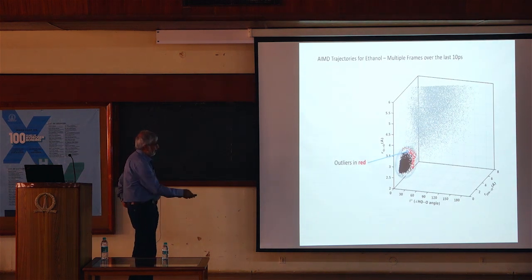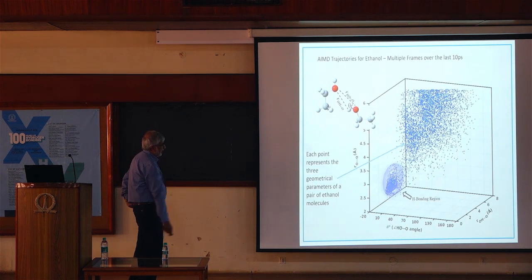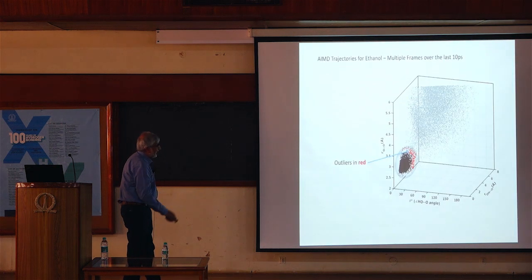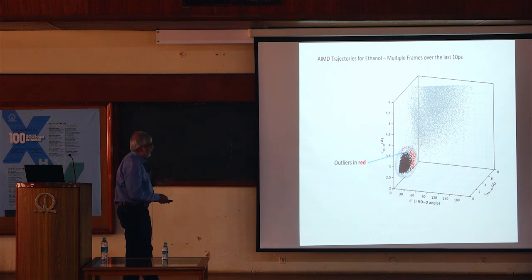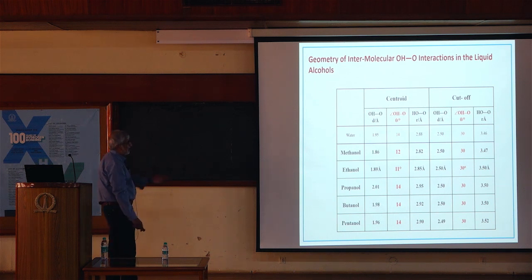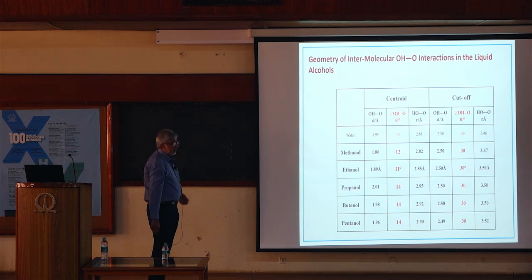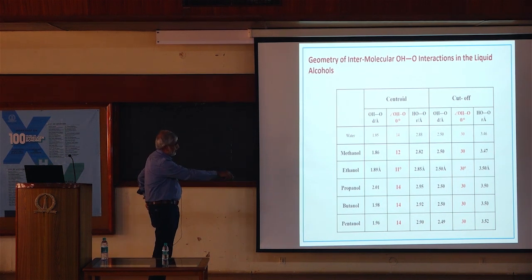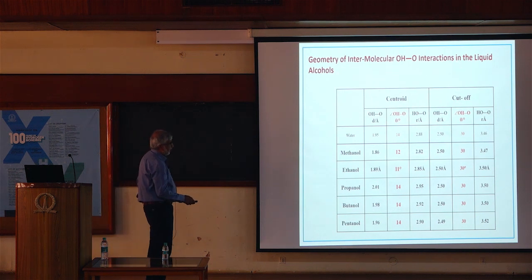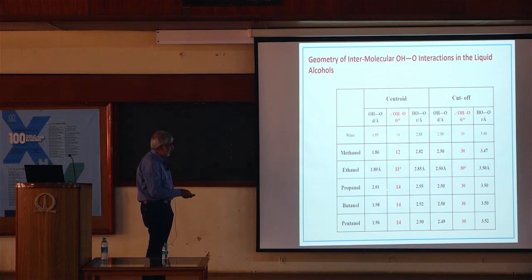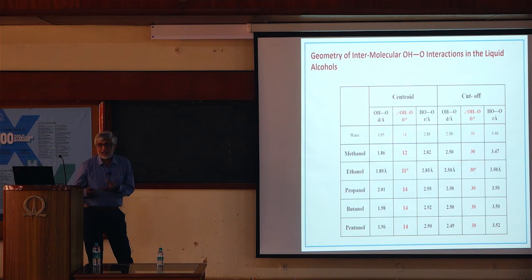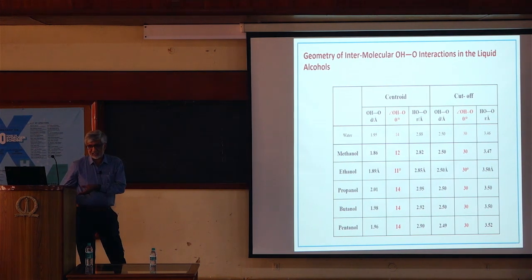Using this statistical analysis with Mahalanobis distances, we are able to identify the outliers in red, and thus define the cutoff values from our scatter plot. Two interesting observations emerge: the geometry tends to be almost linear, and there is not much change in the angle or geometrical parameters defining the hydrogen bond irrespective of the alkyl chain length.